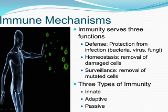Adaptive immunity. The second kind of protection is adaptive or active immunity, which develops through our lives. Adaptive immunity involves the lymphocytes and develops as people are exposed to diseases or immunized against diseases through vaccination.